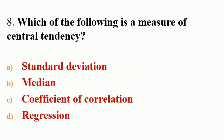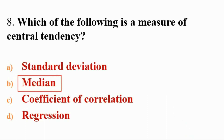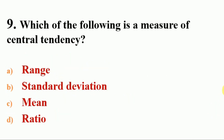Next question: which of the following is a measure of central tendency? Options: A. range, B. standard deviation, C. mean, D. ratio. The answer is C, mean. Mean is a measure of central tendency.